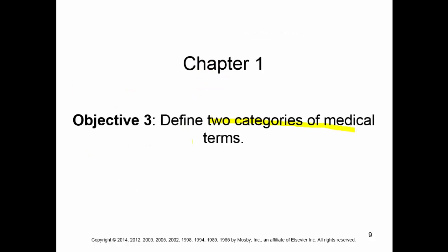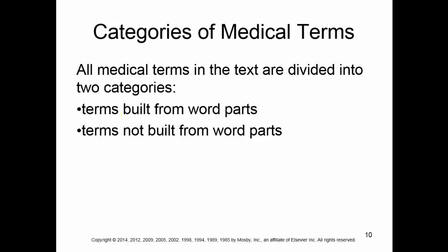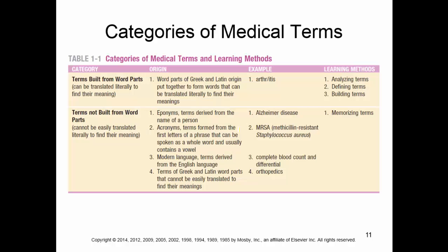The second objective is to define two categories of medical terms. The two categories are: terms that are built from word parts, and terms that are not built from word parts. There are going to be a lot of words you can tackle using your skills and strategies. This table — on page five in your textbook — is called 'Categories of Medical Terms and Learning Methods.' It covers the category, the origin of those words, gives an example, and discusses learning strategies for success.